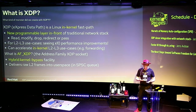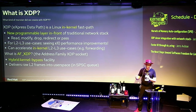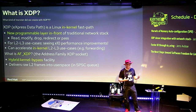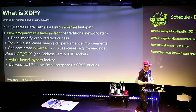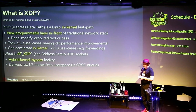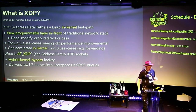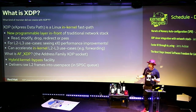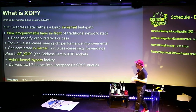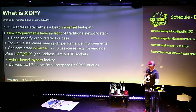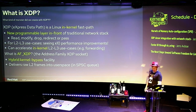The idea is that this is still in-kernel and we can accelerate some of these layer 2 to layer 3 use cases, for example forwarding. But we also have something new called AF-XDP, which is the address family XDP socket. The maintainers and authors of that are also here in the room. That is sort of what I call a hybrid kernel bypass facility — you can deliver raw frames into user space, bypassing the kernel. It's a single producer, single consumer queue, and that's part of the performance gain.